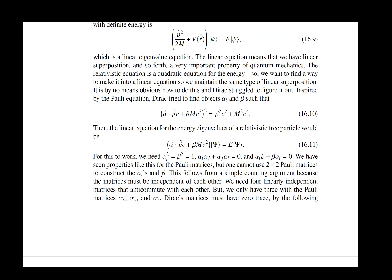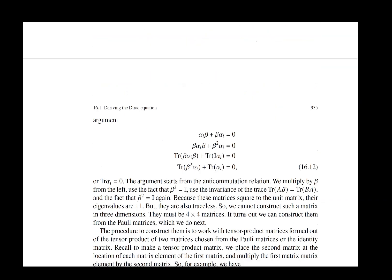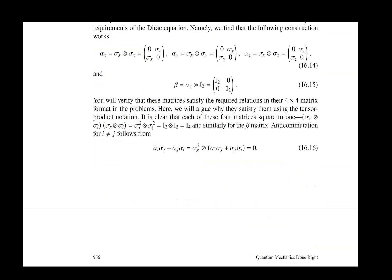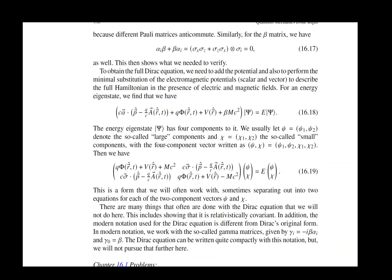Here we have to work with a more complicated thing. We have alpha dot p times c plus beta times mc squared, where the alphas and betas are now 4 by 4 matrices. But when they're all squared together, it will equal p squared plus mc squared. We can use that to find a linear equation by essentially factorizing it that becomes the Dirac equation. That's essentially the Dirac equation once we've added the potential to it. We have to figure out what these alpha and beta matrices are, and that takes a little bit of work.